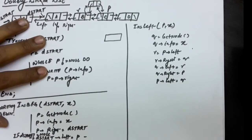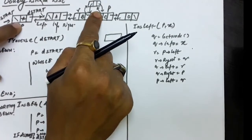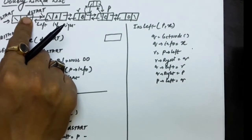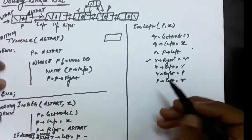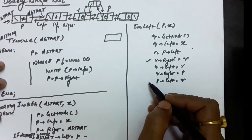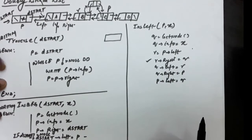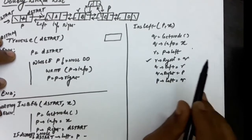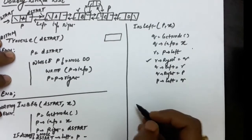There could be an exceptional condition here as well. Suppose you have been given the address of the first node and you have to insert to the left of the first node. In that case R is null, so R dot right equals to Q would have no meaning. So you can write a condition: if R is null, skip that assignment. This is the insert left operation.